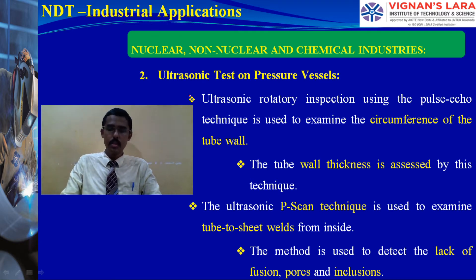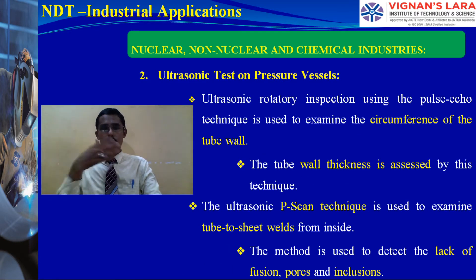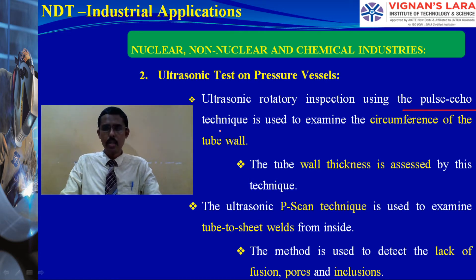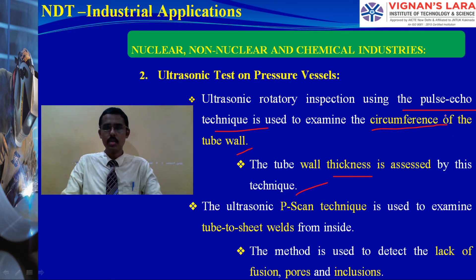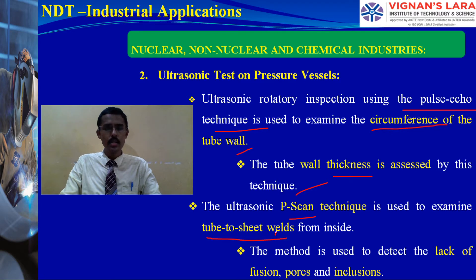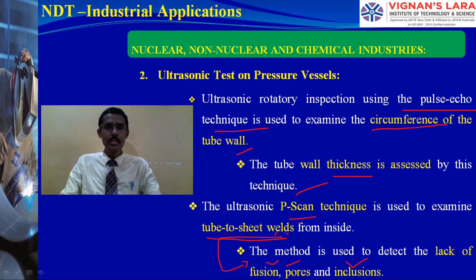For ultrasonic testing of pressure vessels: an ultrasonic rotary inspection using pulse-echo mode is used to examine the circumferential tube wall thickness and tube wall weld joints. Tube wall thickness is assessed by this technique. The P-scan technique is used to examine tube-to-sheet welds and can detect lack of fusion, pores, and inclusions — a subsurface defect-finding method.